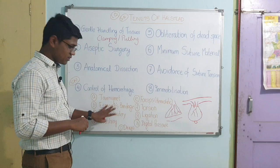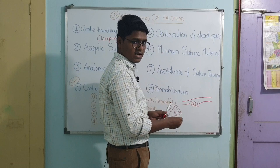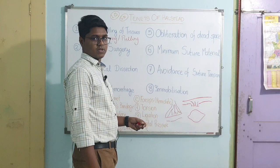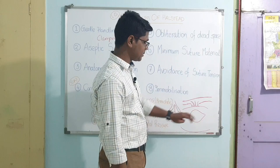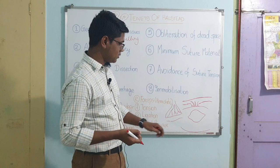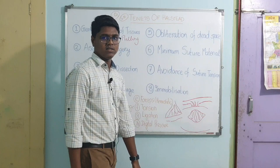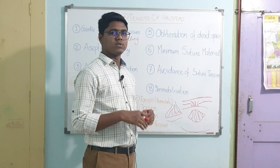Next tenet is obliteration of dead space. After removal of the tumor, there will be creation of a dead space in the cavity. You have to obliterate this dead space because accumulation of exudate or blood in it provides a good medium for bacterial growth, leading to sepsis. You can give continuous sutures to minimize the dead space. There will always be some dead space left but it should be minimum. Next tenet is minimum use of suture material — suture materials are foreign bodies and cause tissue reaction, so use only as much as needed.